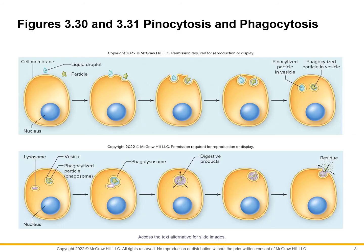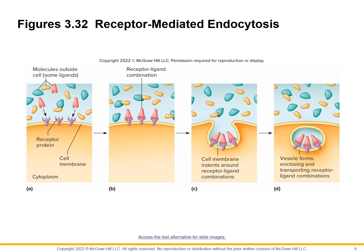These are pictures showing how this works. Receptors — my body's cells can control the receptors on the surface. When I need a particular substance, I create the receptors. When I don't, I don't.